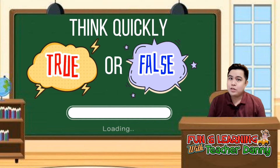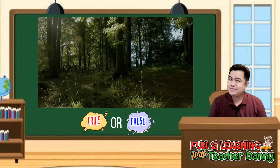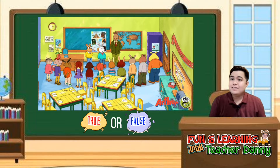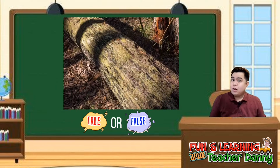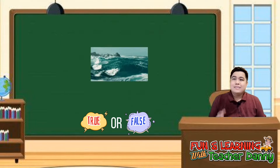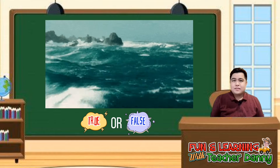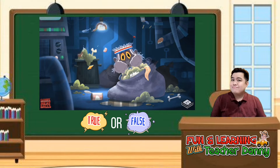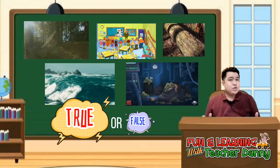Think quickly — is it true or false? Number one: a forest is a place where living things and non-living things live and grow. A school is a place where organisms such as humans, plants, and animals live together. Three: a rotting log has living organisms inside. Four: the ocean has a lot of living things and non-living things. And five: a dump site also has living and non-living things interacting in it.